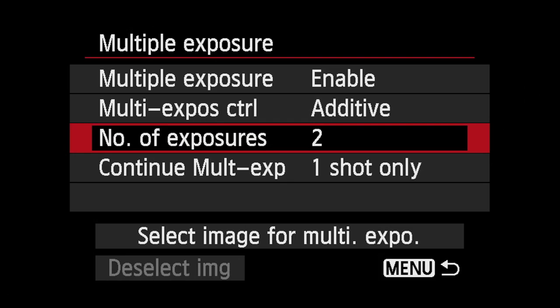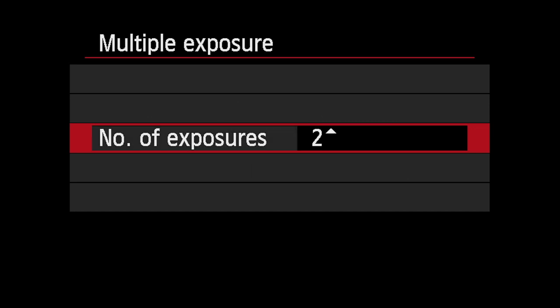It helps avoid overexposure as images are composited. You can choose the number of frames you'd like to use in a finished composite image — from two to nine original frames can be shot in sequence and then combined in-camera to create a single finished multiple exposure image.